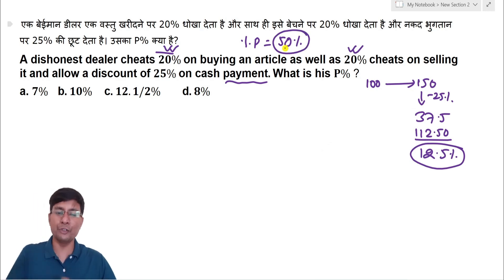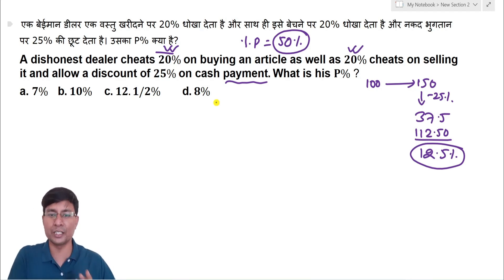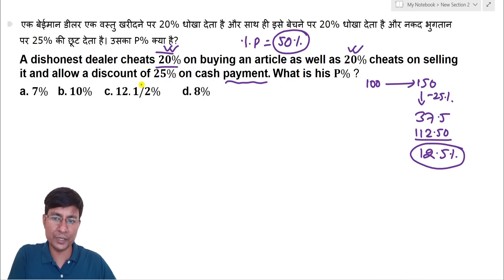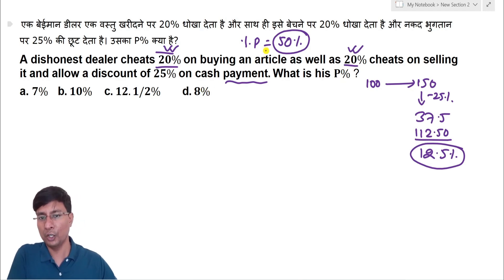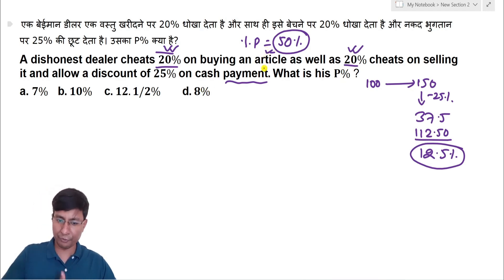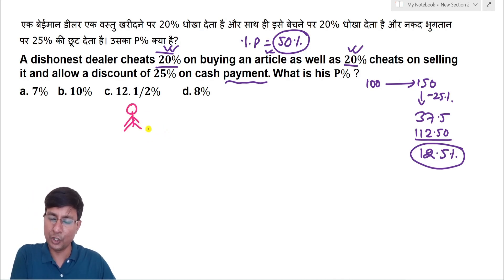I have made a video but there are a lot of comments asking for different methods to be explained. If someone is buying with 20% cheat and selling with 20% cheat, the net profit will be 50%. I will explain this clearly here.